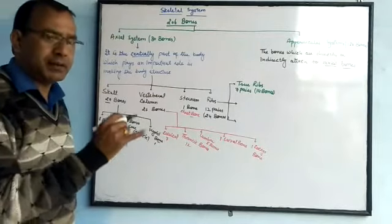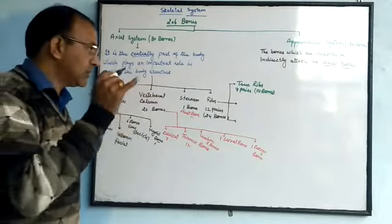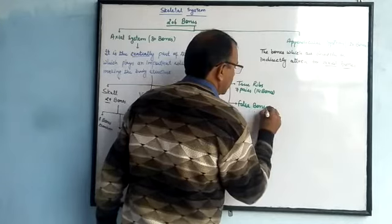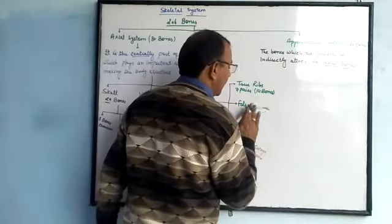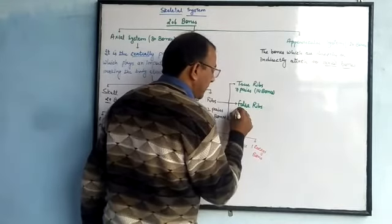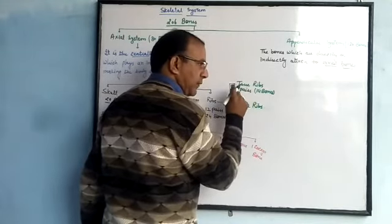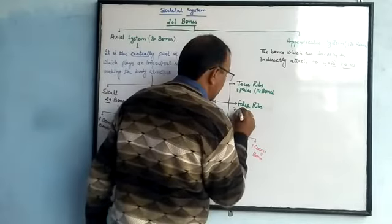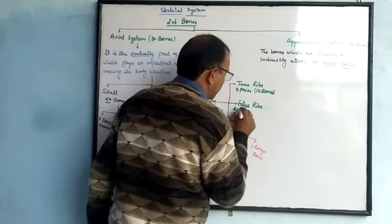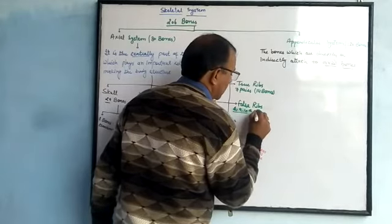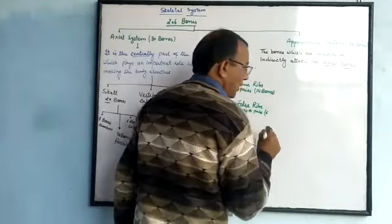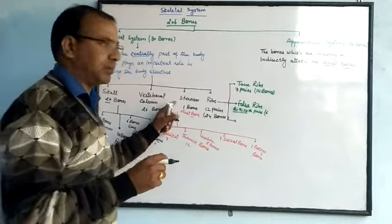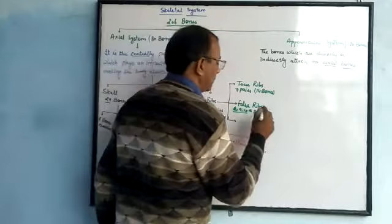The next three pairs — the 8th, 9th, and 10th — consisting of six bones, are known as false ribs. These are dorsally attached to the vertebral column but are not directly attached to the sternum, so they are called false ribs, comprising six bones.